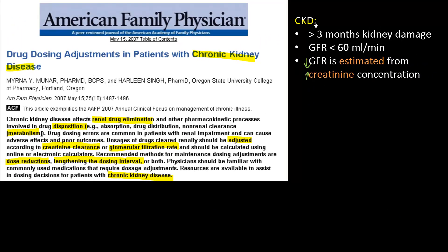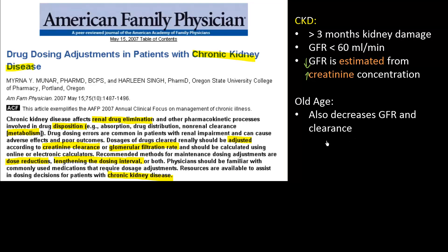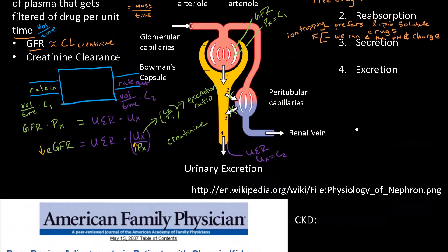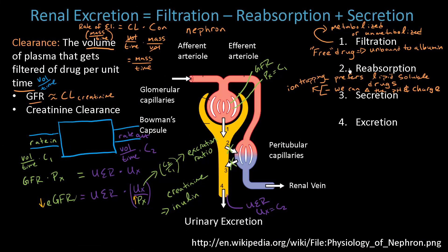One group of patients to be familiar with are those with chronic kidney disease. The other is older patients, because as you get older your GFR decreases and thus your clearance. When you're in the hospital, you might dose a drug and get a call back from the pharmacy saying they need to adjust the dosage because the patient has a low GFR or chronic kidney disease. In the next video, we'll talk about ion trapping, which can block the reabsorption of drugs.